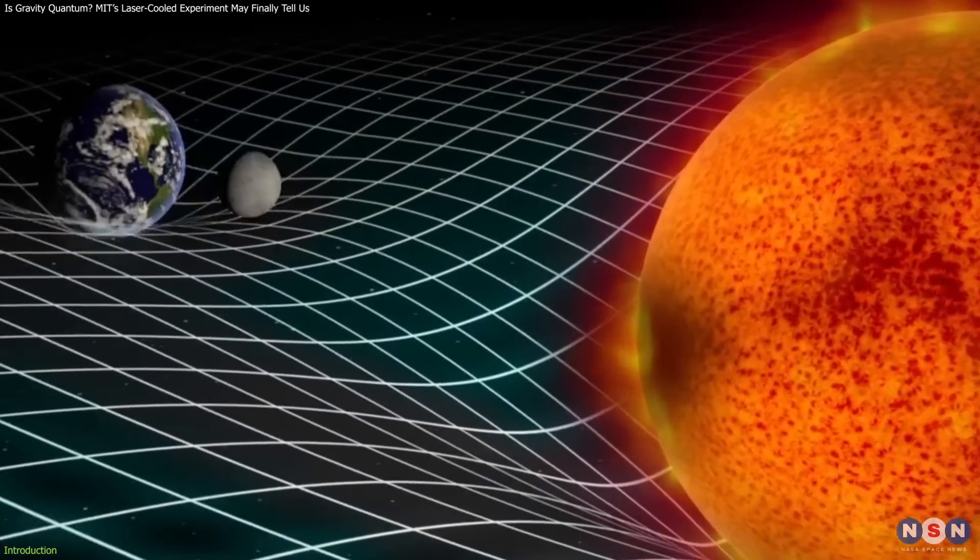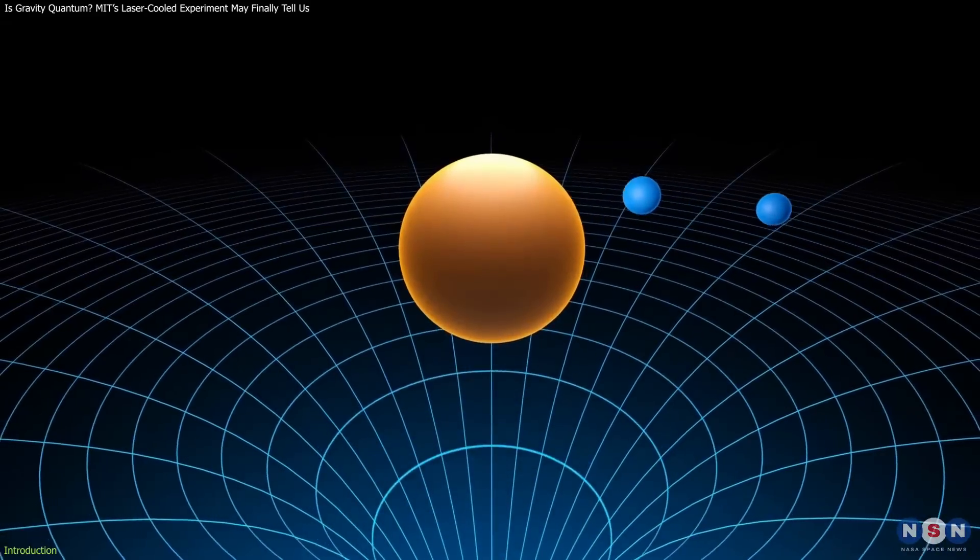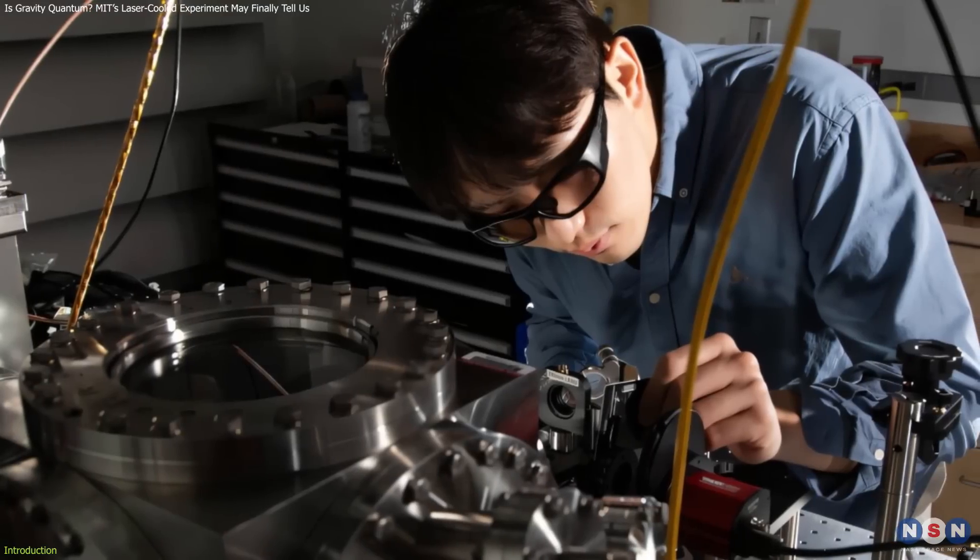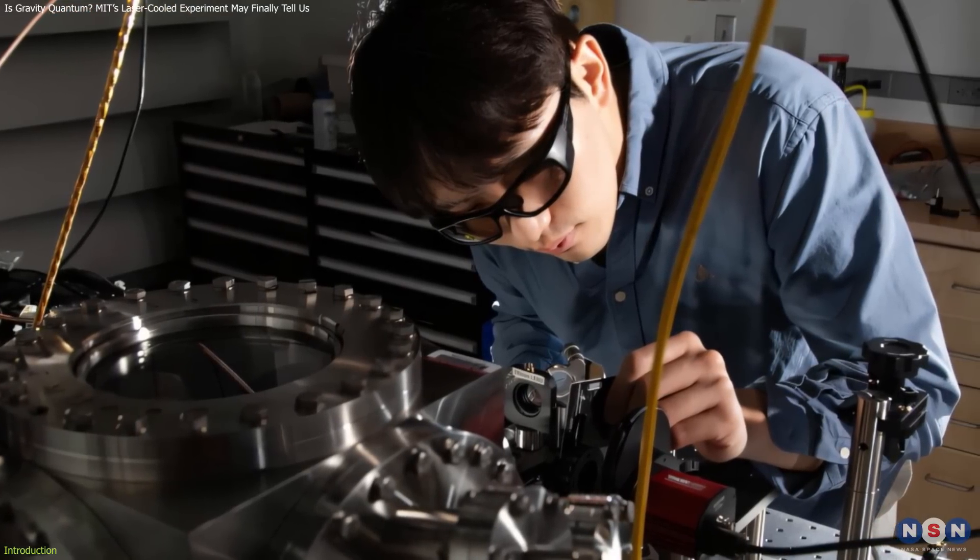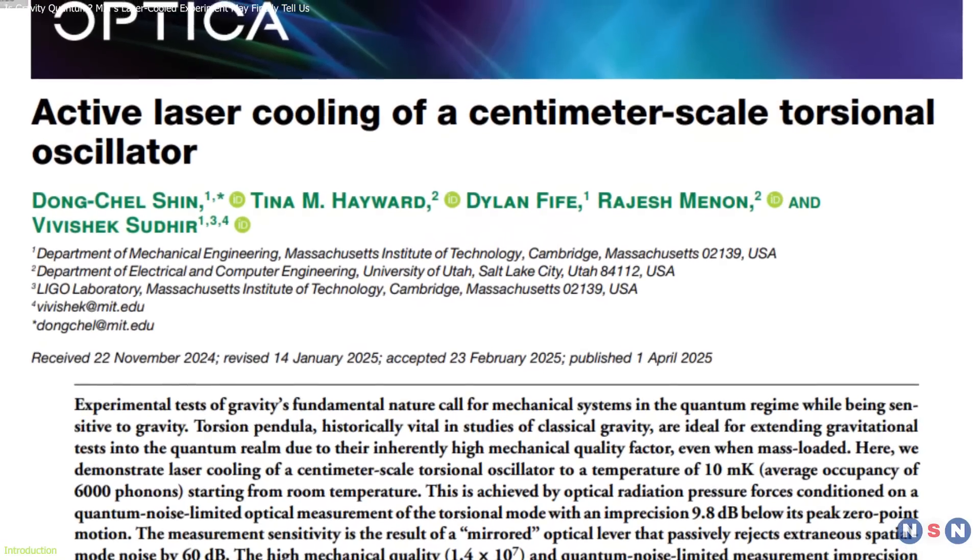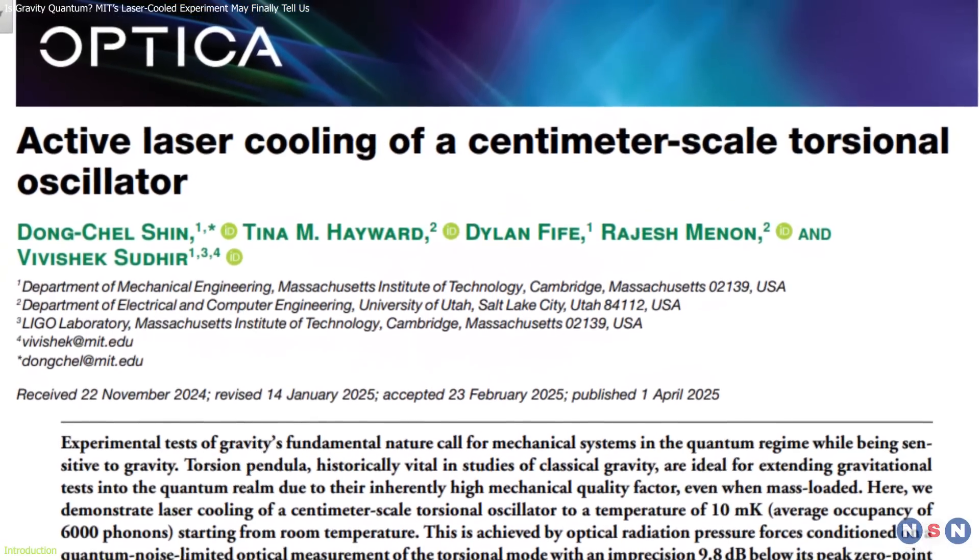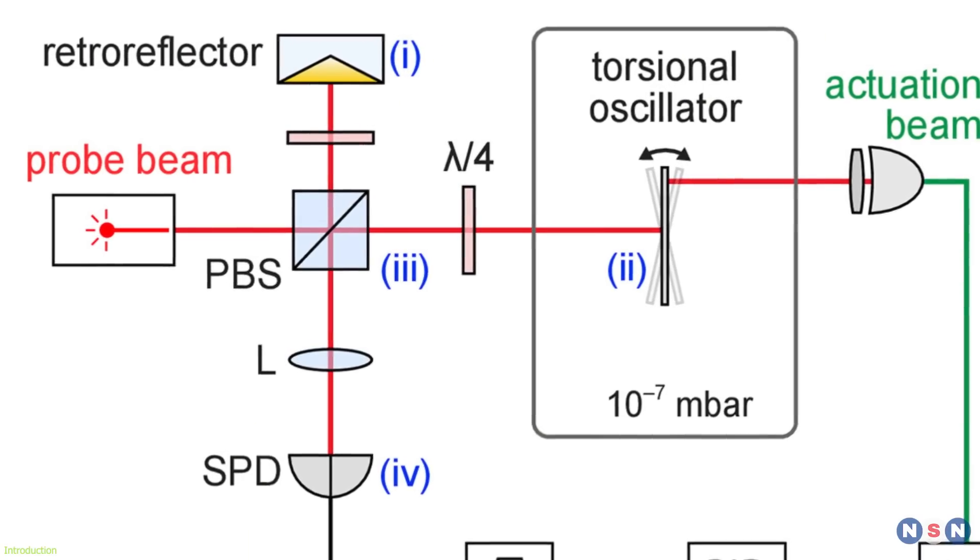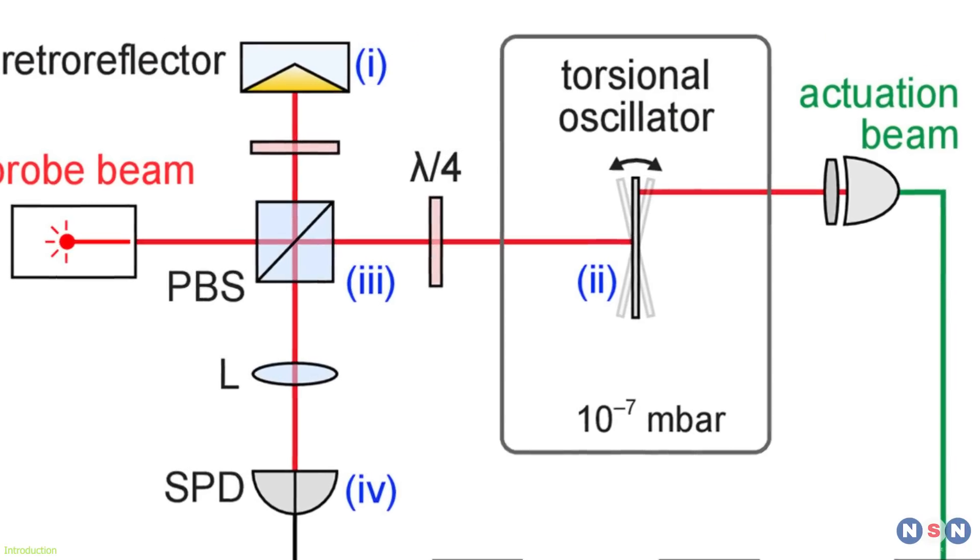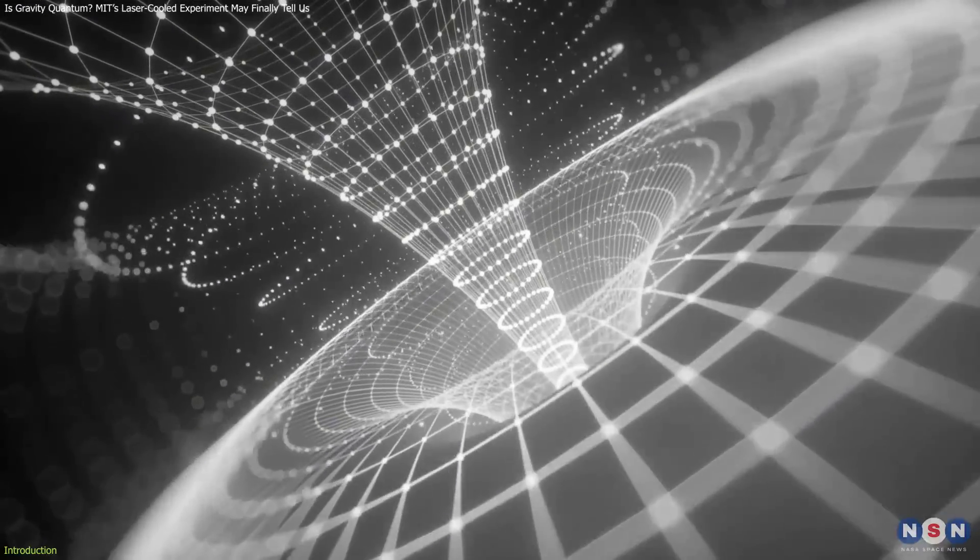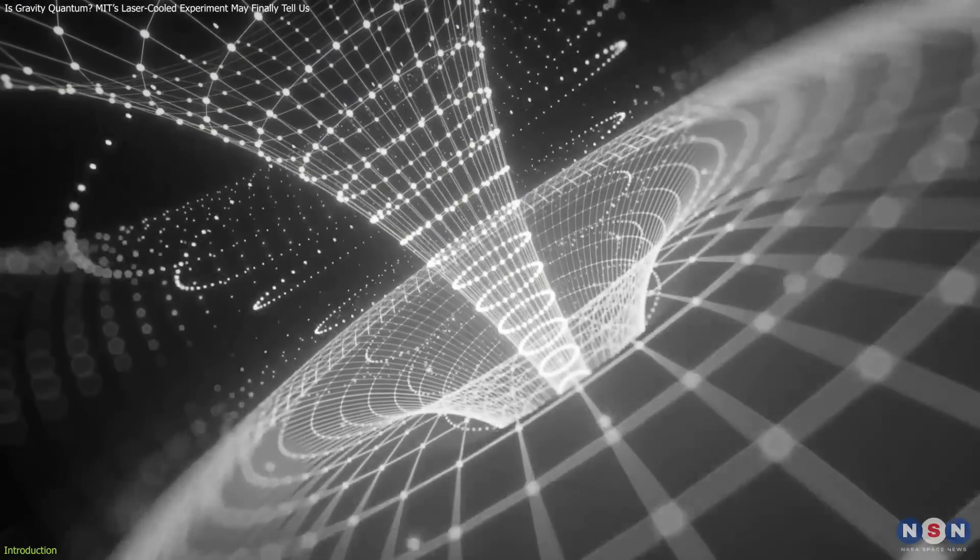But gravity has always resisted. We still describe it with Einstein's general relativity, a classical theory. What if we finally had a way to test gravity's quantum nature in the lab? That's exactly what a new breakthrough from MIT promises. Researchers have developed a powerful new technique: laser cooling a centimeter-scale torsional oscillator.